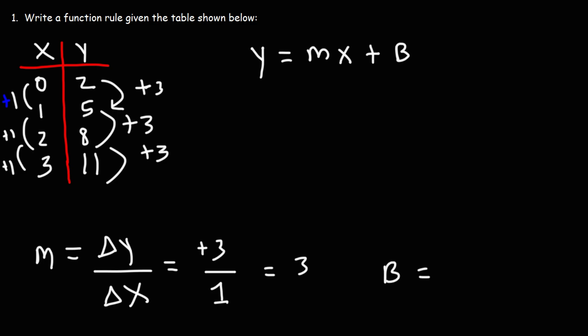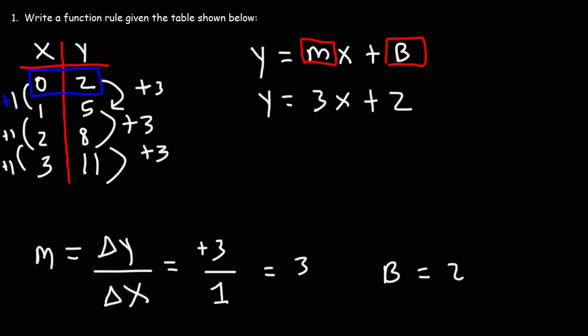B is the y-intercept — the y-value when x is zero. When x is zero, y is two. So the y-intercept is two. All we need to do is replace m and b, and we'll have a function rule that gives us y for any x value we choose. That function rule is y equals three x plus two.